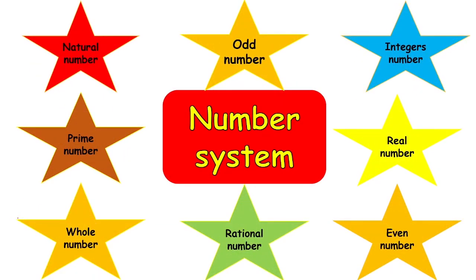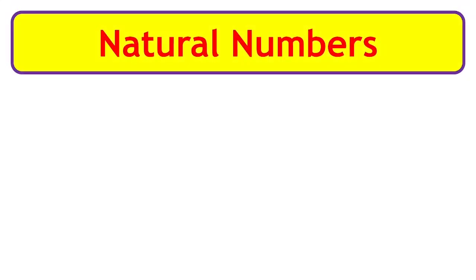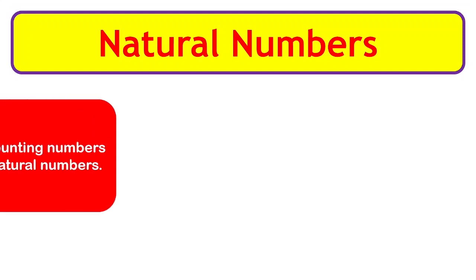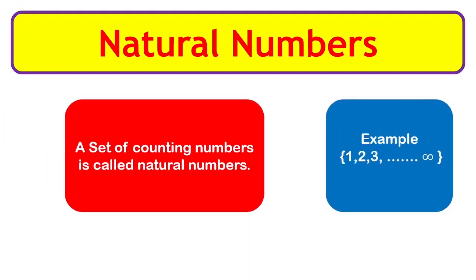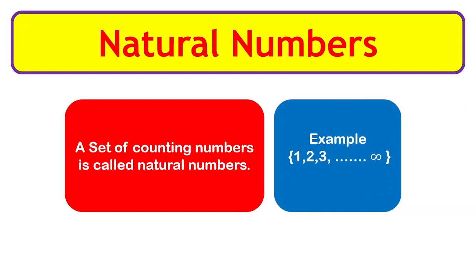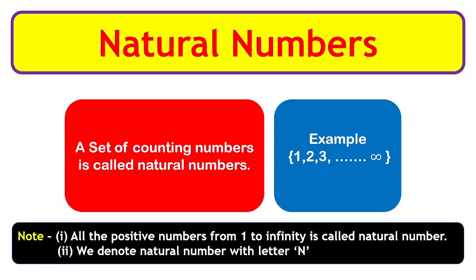Number system. Natural numbers: a set of counting numbers is called natural numbers. Example: 1, 2, 3, etc., continuing up to infinity. The first note is that all positive numbers from 1 to infinity are called natural numbers, and we denote natural numbers with the letter N.